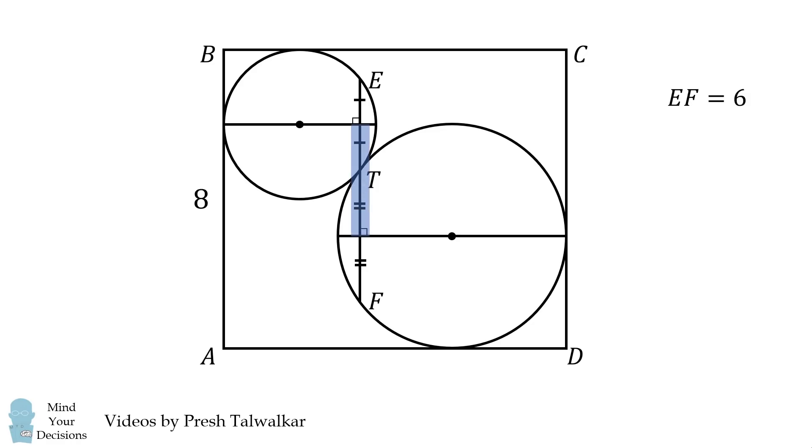Let's now calculate the vertical distance between the two diameters of these two circles. Notice that ET plus TF is equal to EF. This means half of ET plus half of TF is equal to half of EF. Therefore, we have the length of this vertical distance will be equal to EF over 2, which is equal to 3.